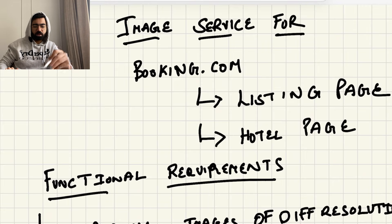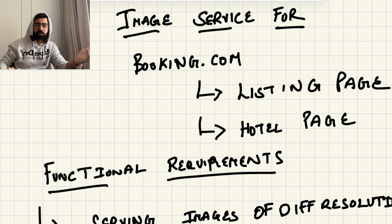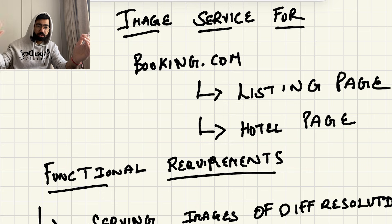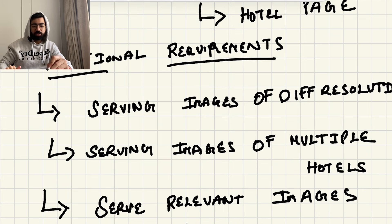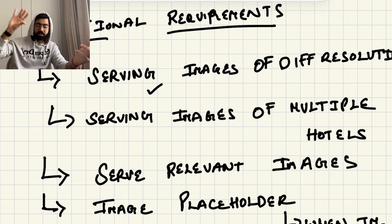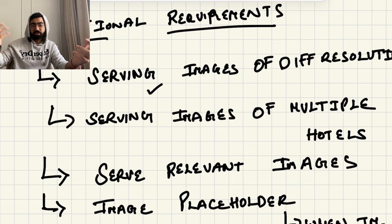First, let's talk about the functional requirements. Different pages need different resolution images — for example, on the search page you see small images, but when you open a hotel page you see big images, while related hotel images are small. So the first functional requirement is to serve images of different resolutions. The second is serving images of multiple hotels, not just one hotel but also related hotels around it.